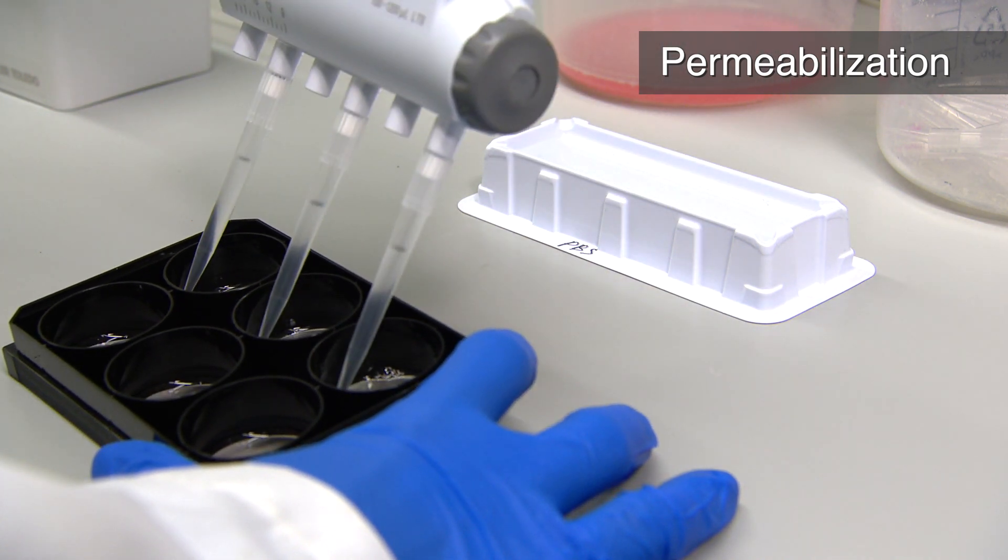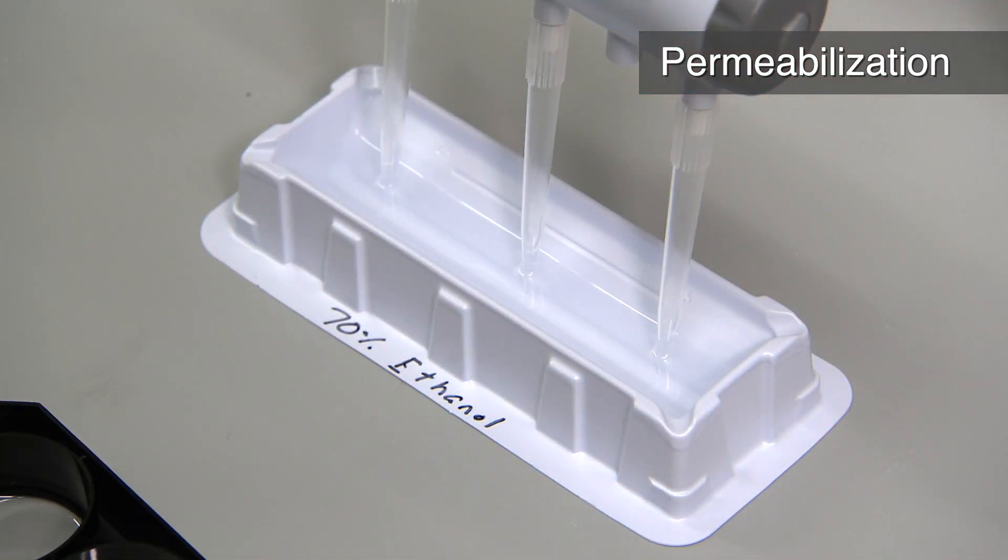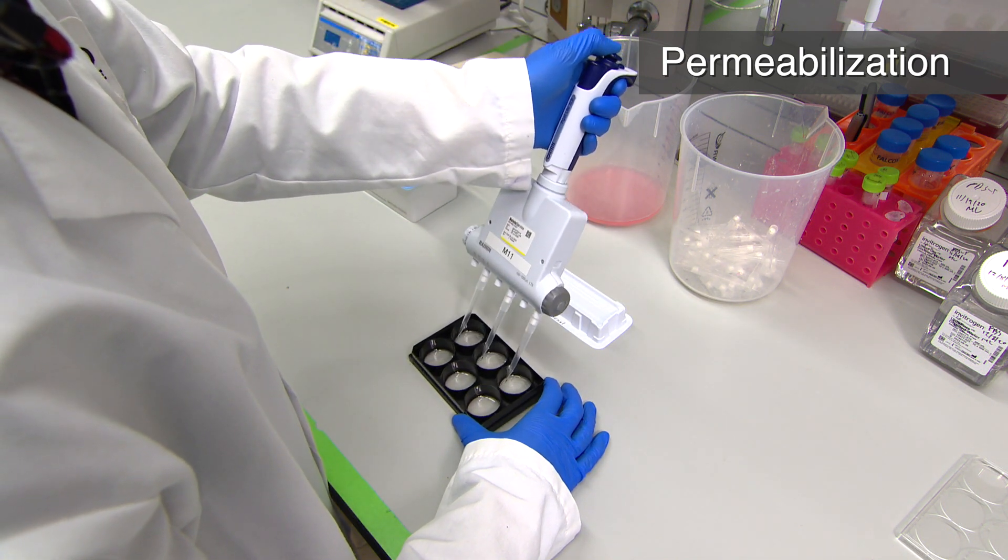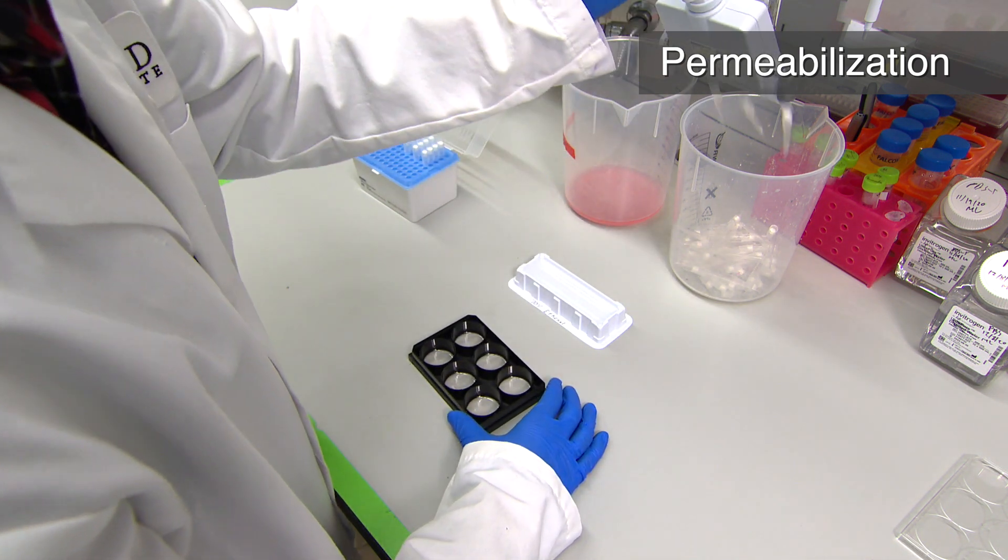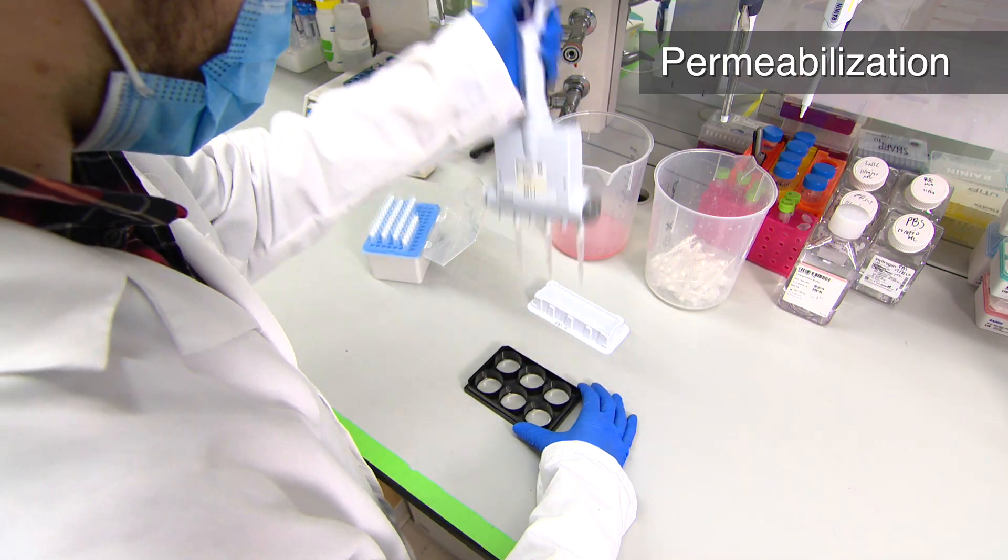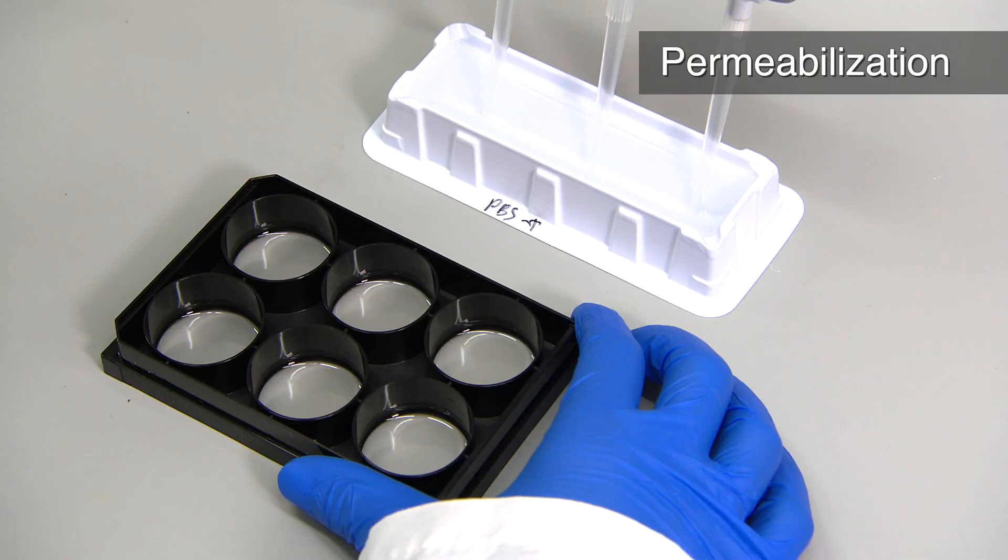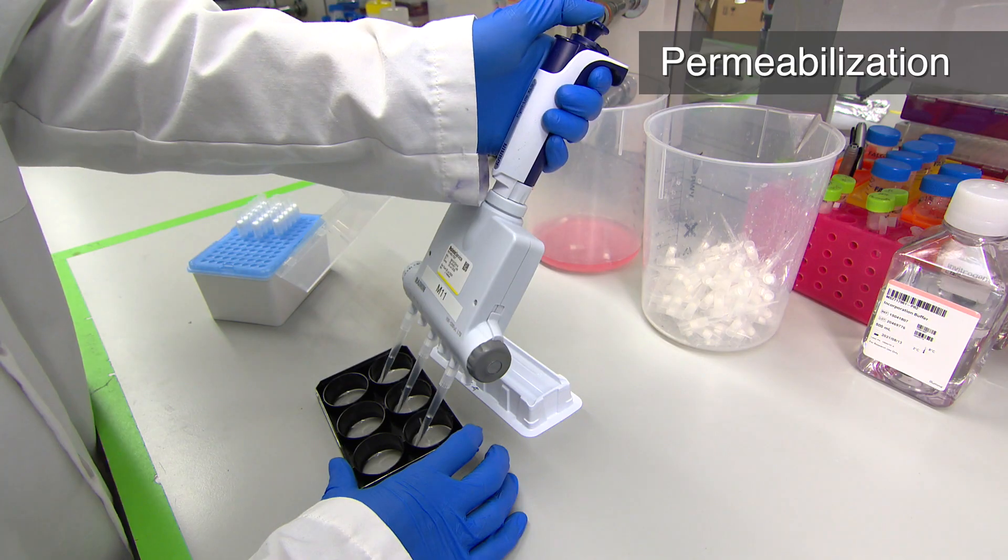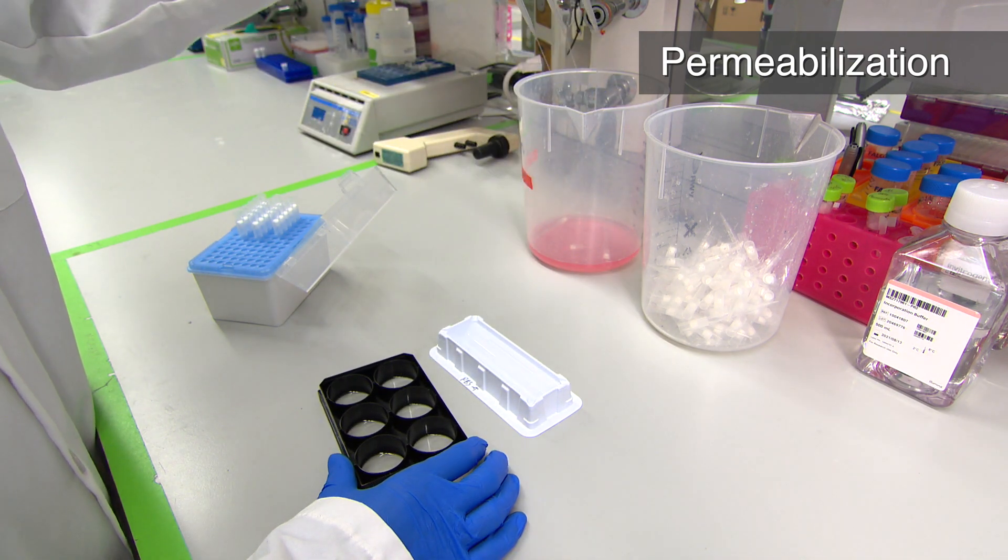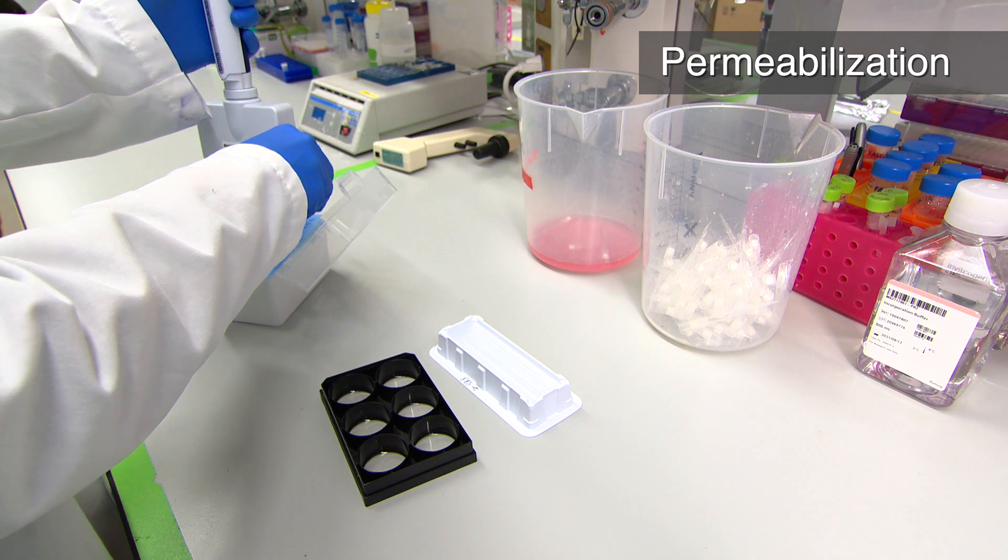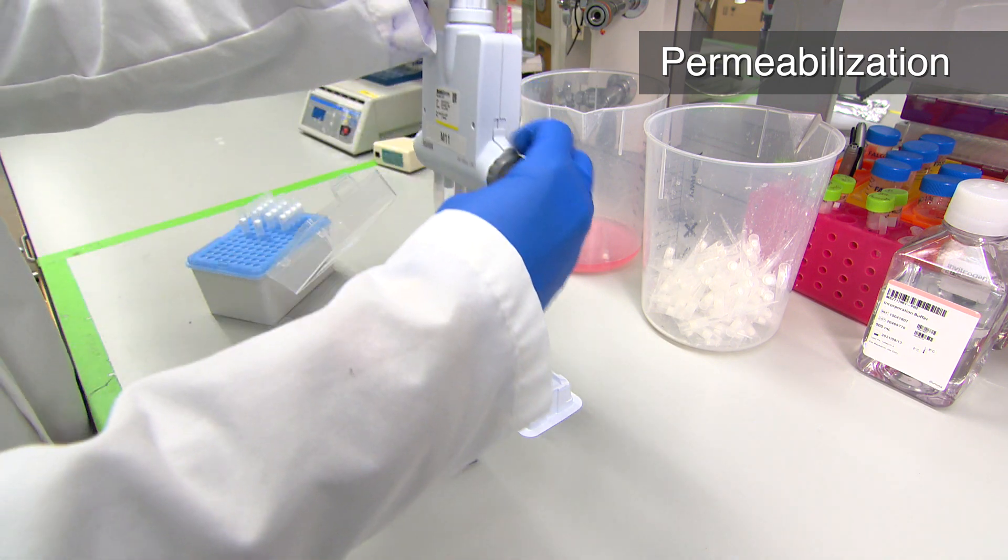Next, wash the plate 3 times with 1 milliliter of PBS and permeabilize with 1 milliliter of 70% ethanol for 30 minutes at room temperature. Next, remove 500 microliters of ethanol. Serially add and remove 1 milliliter of PBS-T 6 times. Avoid exposing the plate surface to air until ethanol is diluted out. Finally, remove all liquid and perform 3 additional PBS-T washes.